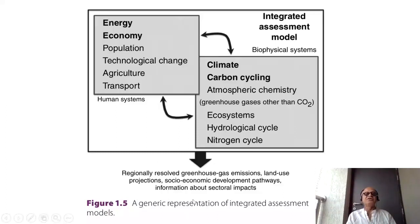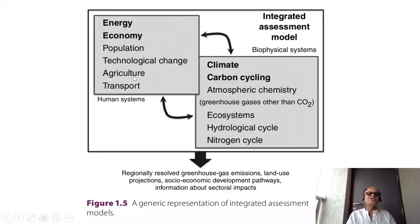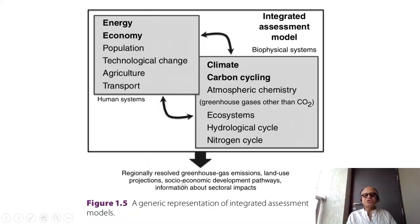Integrated assessment models try to bridge this gap by simplifying the earth system and focusing on socio-economic aspects. They use biophysical systems — climate carbon cycling, atmospheric chemistry, ecosystems, hydrologic cycles, nitrogen cycle — with feedback from human systems like energy economy, population, technological change, agriculture, and transport. The goal is to produce scenarios including regionally resolved greenhouse gas emissions, land use projections, socio-economic development pathways, and information about sectoral impacts.